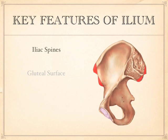Let's turn it over. Now we're looking at the medial side. I can still see the four spines. I can't see the gluteal surface anymore. There is an auricular surface here. The reason for this is tied up in the word auricle. Your auricle is your ear — so look for a surface here that's shaped like an ear.